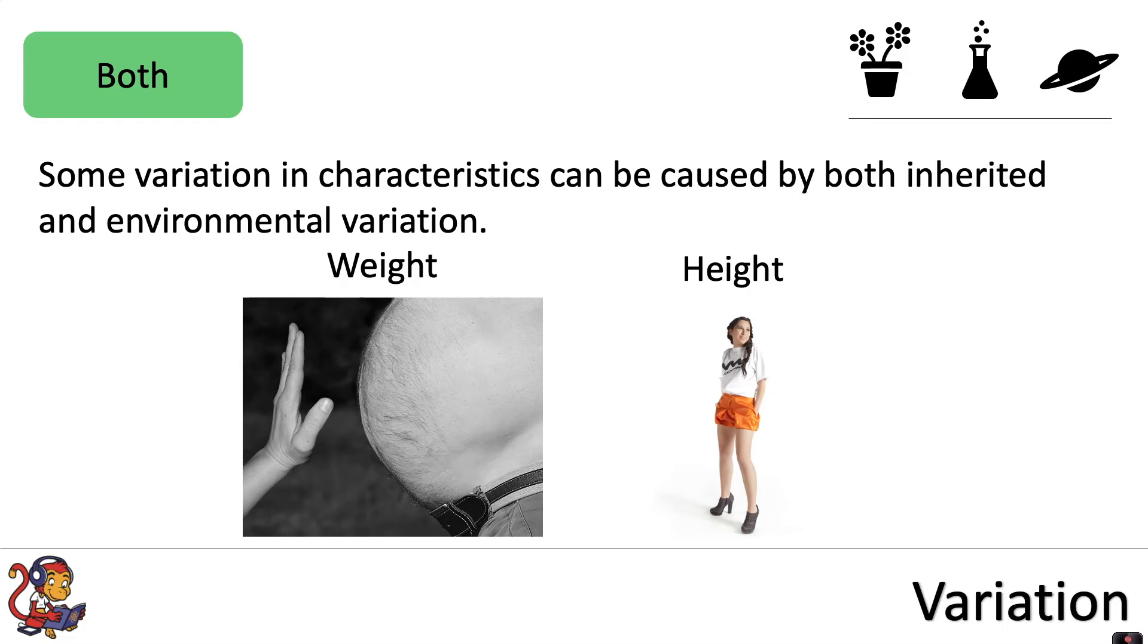And the same with height. Your genetics or your inherited variation may well predetermine your height. However, environmental variation can also play a factor, and perhaps if you're malnourished, you might not achieve that particular height that's determined by your inherited variation. So both inherited and environmental variation play a factor in determining these two characteristics.